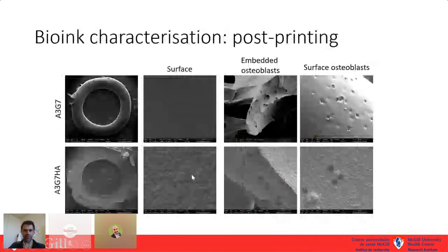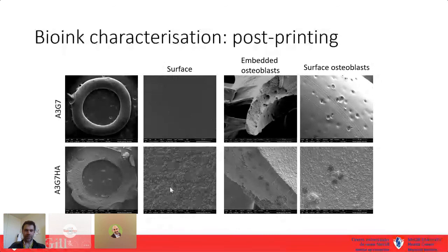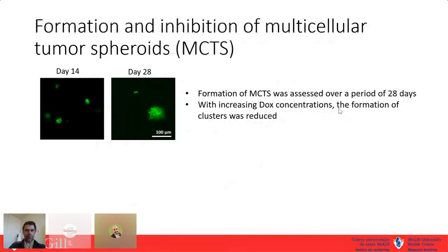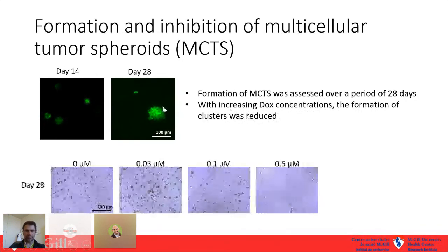SEM showed that without hydroxyapatite the material surface is smooth, but with hydroxyapatite you can clearly see the rough surface from the nano/microparticles. We can see osteoblast cells sitting inside the samples. After 28 days you can go from very small individual cells to large multicellular spheroids. Adding different amounts of doxorubicin blocks those multicellular spheroids from forming — essentially no spheroids under treatment conditions, but quite a lot without treatment.